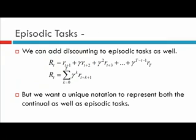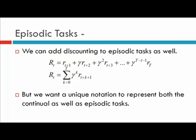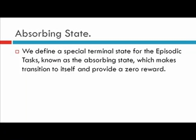Now let us consider the case of episodic tasks with discounting introduced. For episodic tasks, the return can be represented as r_{t+1} plus gamma times r_{t+2} and so on. In compact form this is the summation over all k from 0 to T of gamma^k r_{t+k+1}. We now have two notations — one for discounting in continual tasks and one for episodic tasks. To get a unified notation for both, we introduce an absorbing state — a special terminal state in episodic tasks.